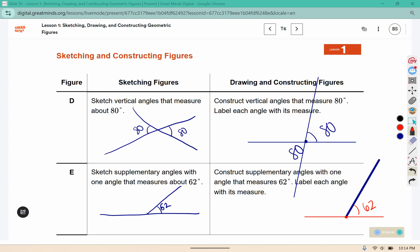Now if these are supplementary they need to add up to 180, so the other angle, 10 minus 2 is 8, 7 minus 6 is 1, 1 minus nothing is 1. This angle is 118 degrees.